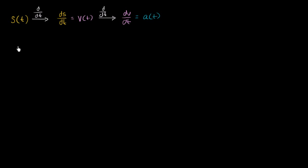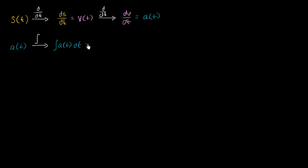Well, you could go the other way around. If you started with acceleration and were to take the antiderivative of it, an antiderivative of it — using the integral symbol — is going to be the integral of a(t). This gives you some expression with a plus c, and we could say that's a general form of our velocity function. To find the particular velocity function, we would have to know what the velocity is at a particular time, and then we could solve for c.